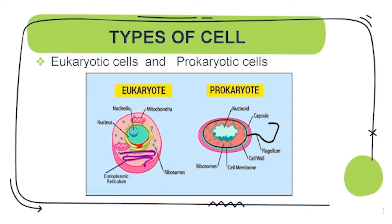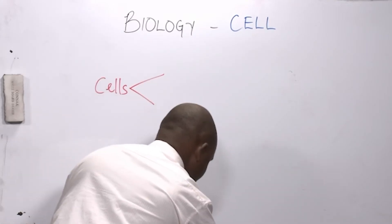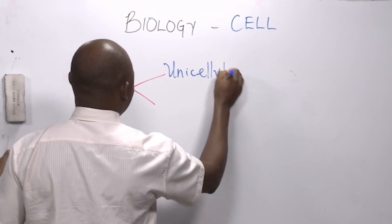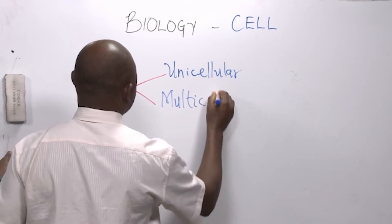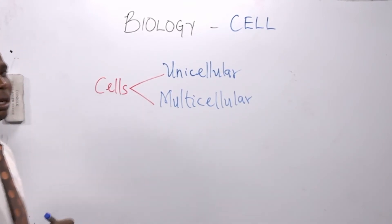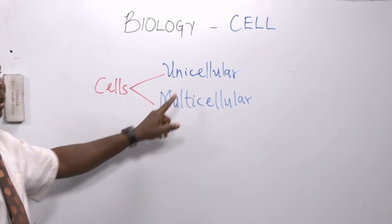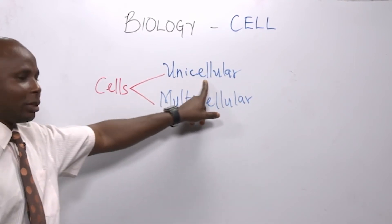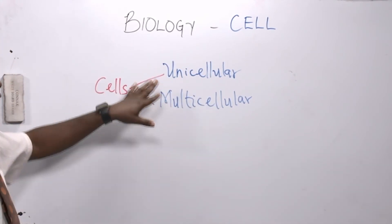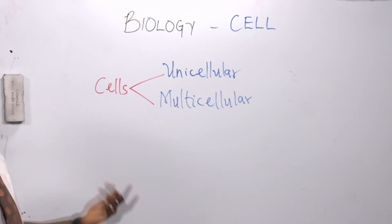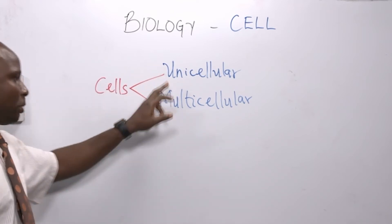Using cells to classify organisms: organisms can be classified based on the number of cells they have. We classify organisms into two categories — unicellular and multicellular. When we say unicellular organisms, we are referring to living organisms made up of only one cell, also called single-celled organisms. Examples include paramecium and amoeba. Multicellular organisms, like you, are made up of many different cells.